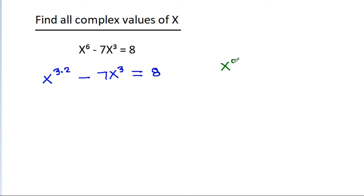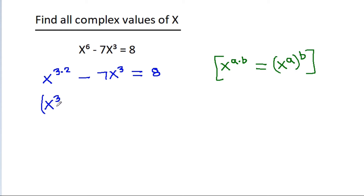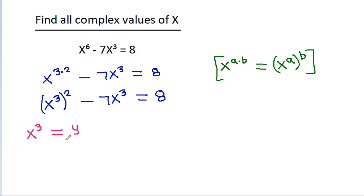We know that x power a times b is equal to x power a power b. So x power 6 can be written as x power 3 power 2. This gives us x power 3 power 2 minus 7x cube is equal to 8. Now, if we take x power 3 equal to y, then it becomes y square minus 7y is equal to 8.